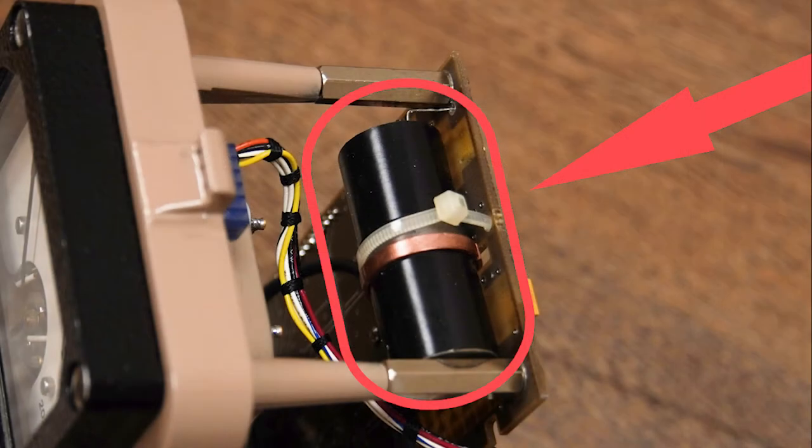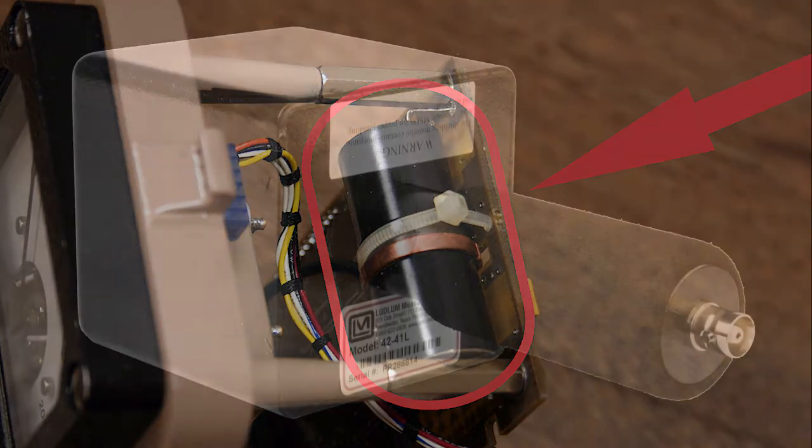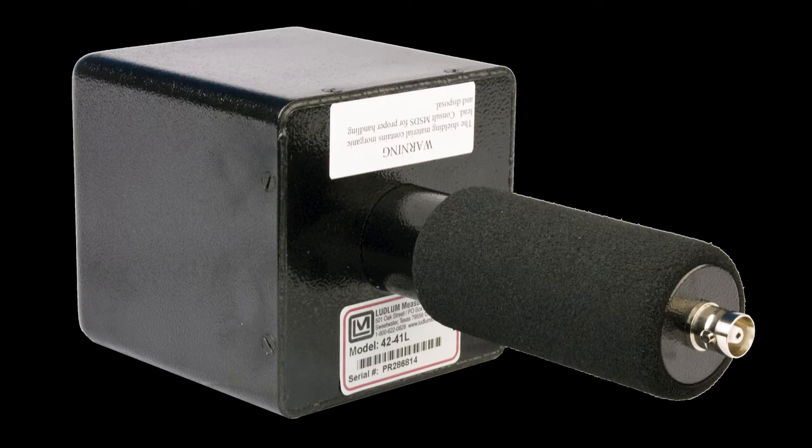The Model 2363 contains an internal energy-compensated Geiger-Mueller detector for gamma measurements and uses the Model 42-41 Priscilla detector for neutron measurements.